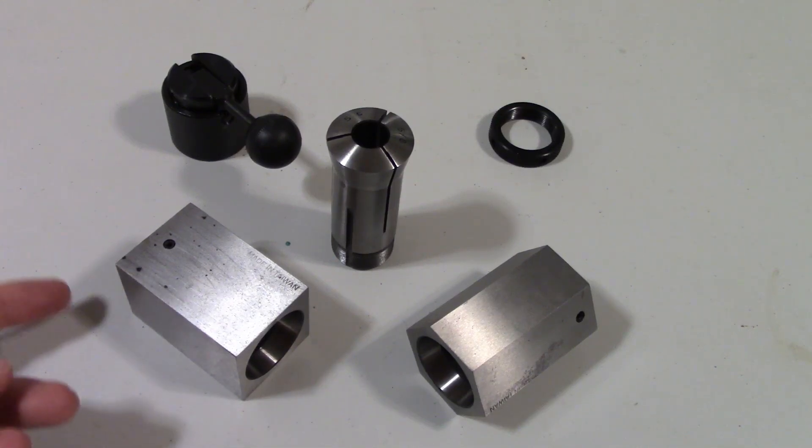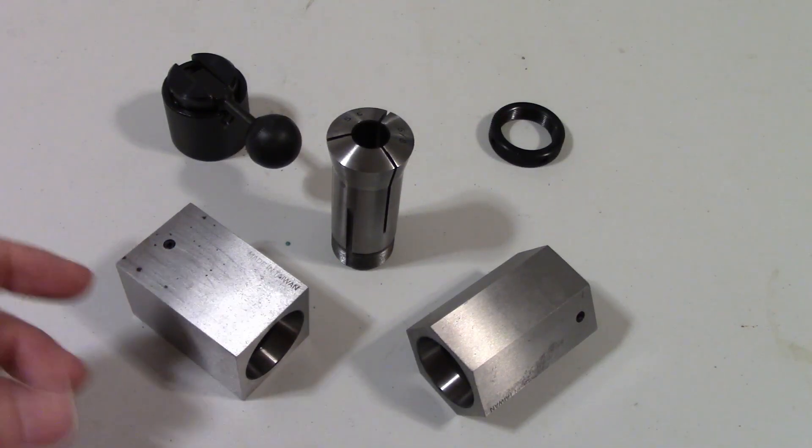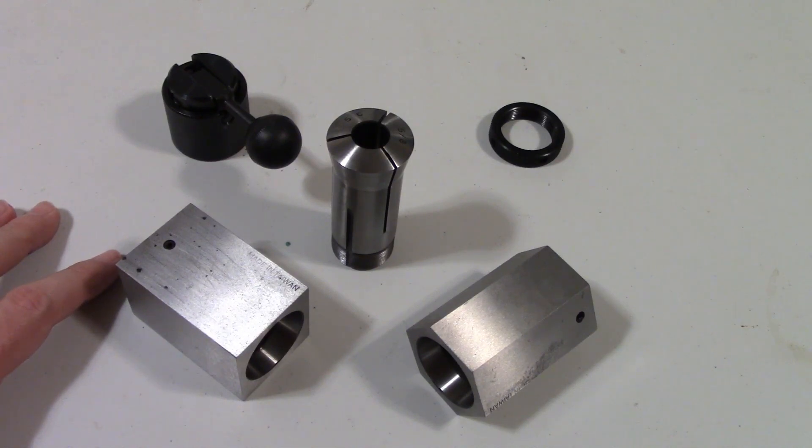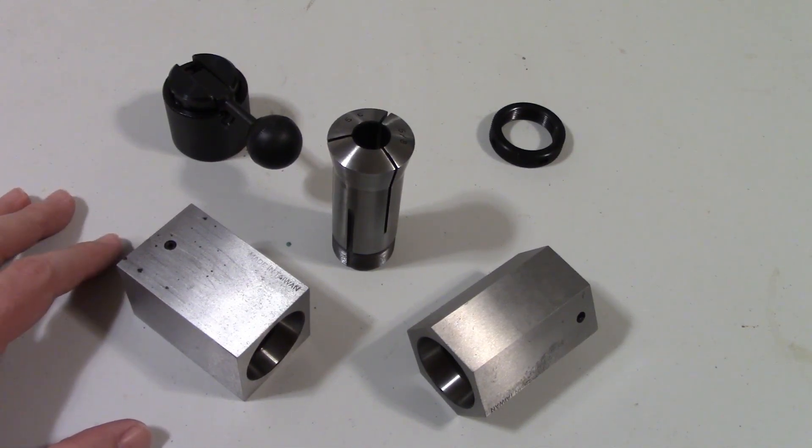Collet blocks are tools that every shop should have and the set is reasonably affordable. At the time of this video, they can be purchased for between $50 and $75 depending on the website.